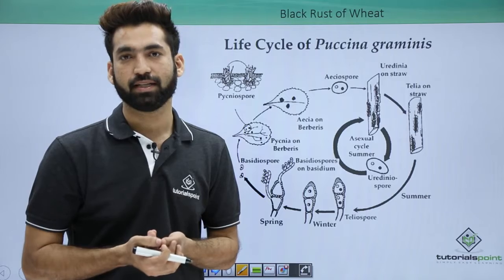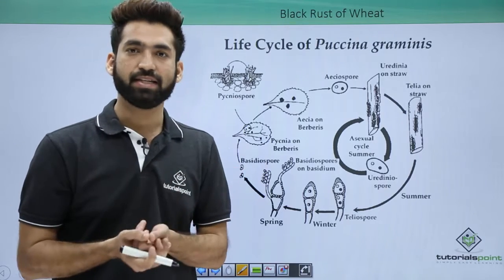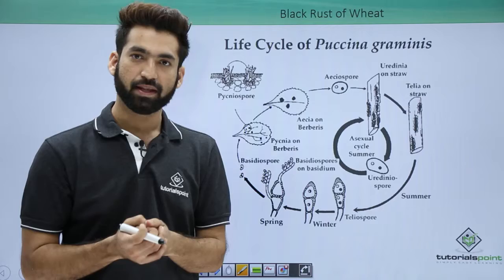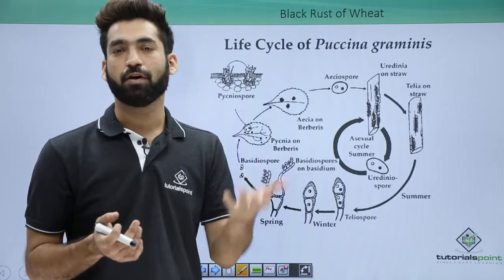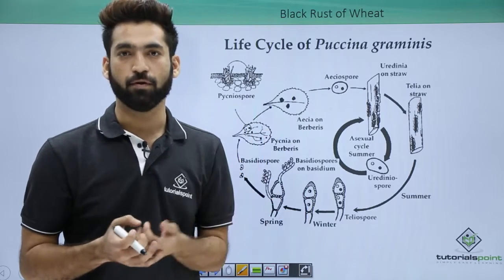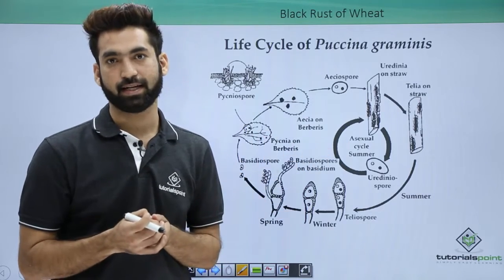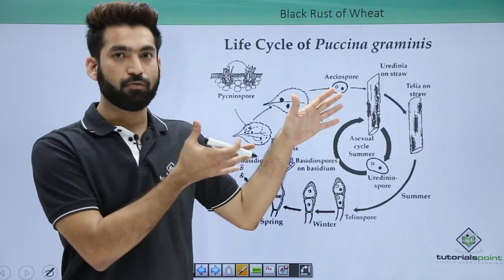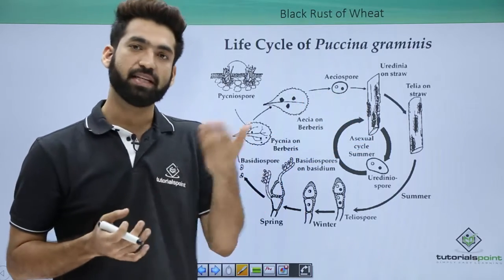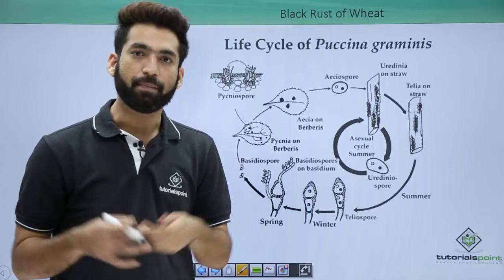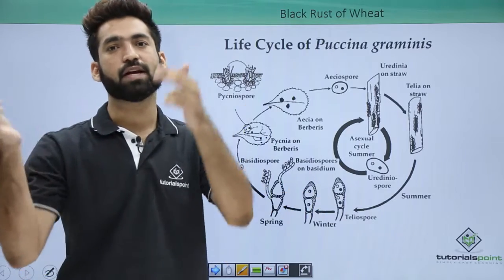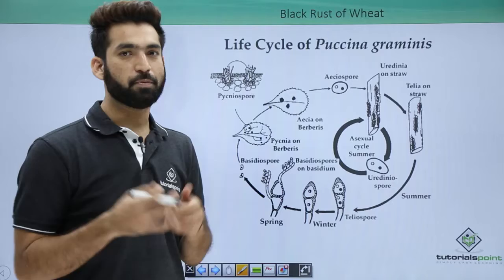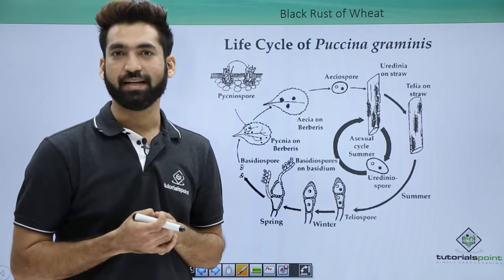What happens to Puccinia after wheat harvest? Once the wheat is harvested, Puccinia will have to look for an alternative host. There are two hosts for Puccinia basically — the major host is wheat, which shows the major disease. But when you harvest wheat, Puccinia looks for the alternative host which is called Barberry. So Puccinia will go and infect the Barberry leaves.